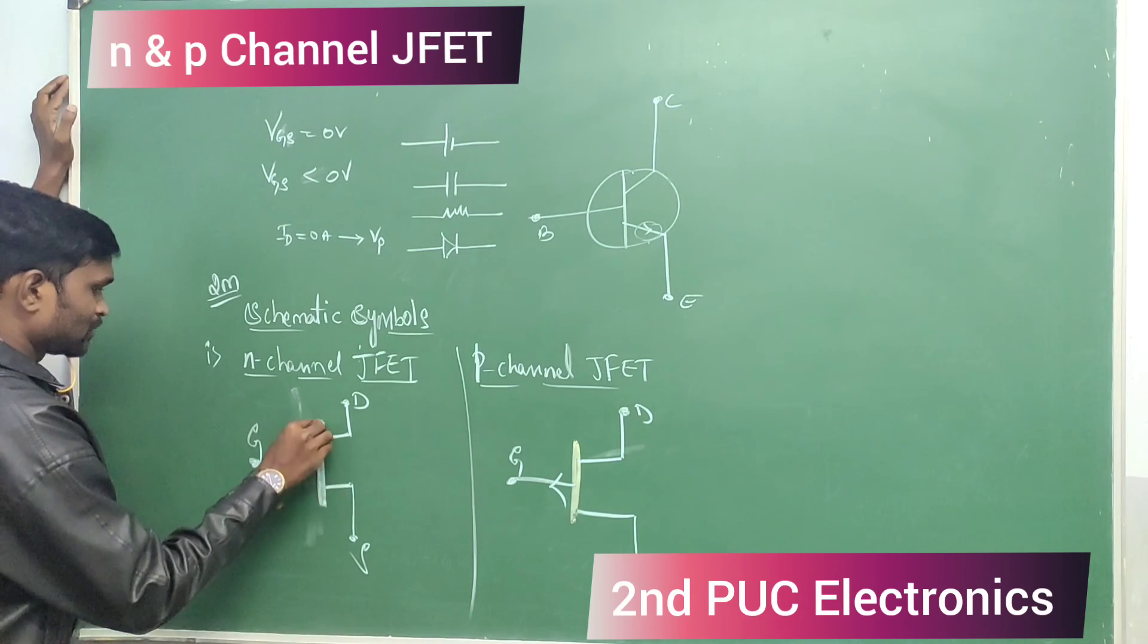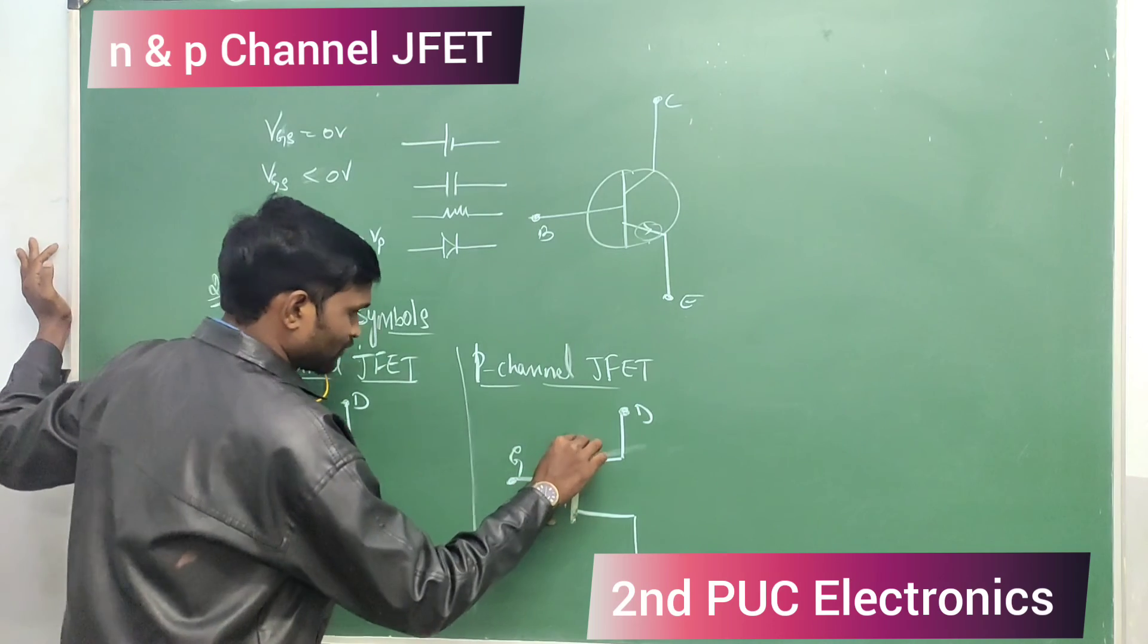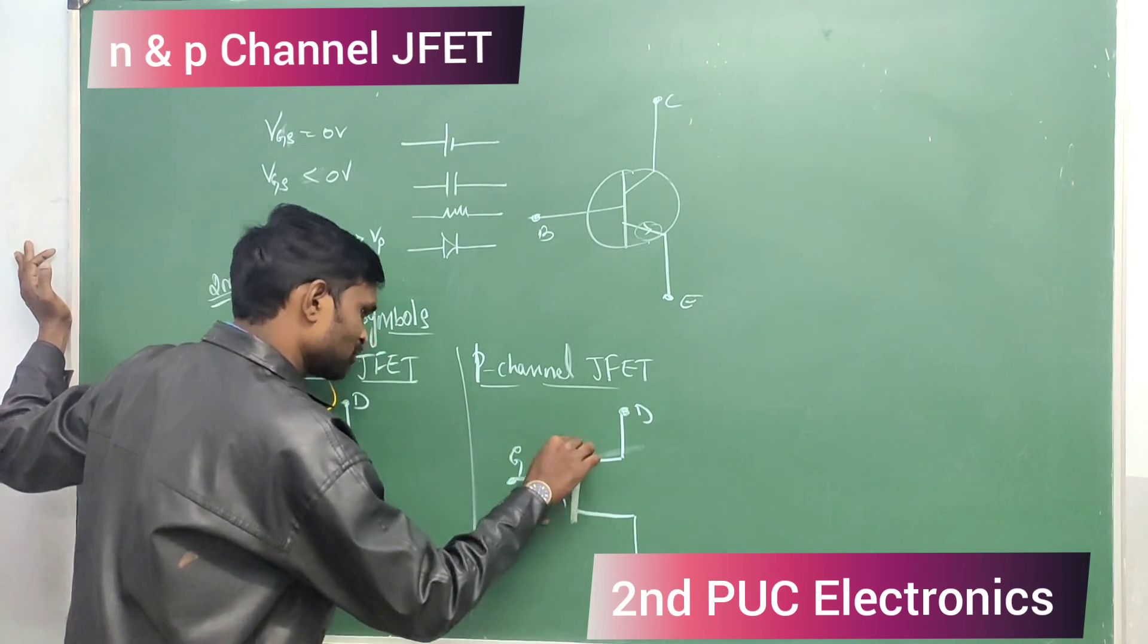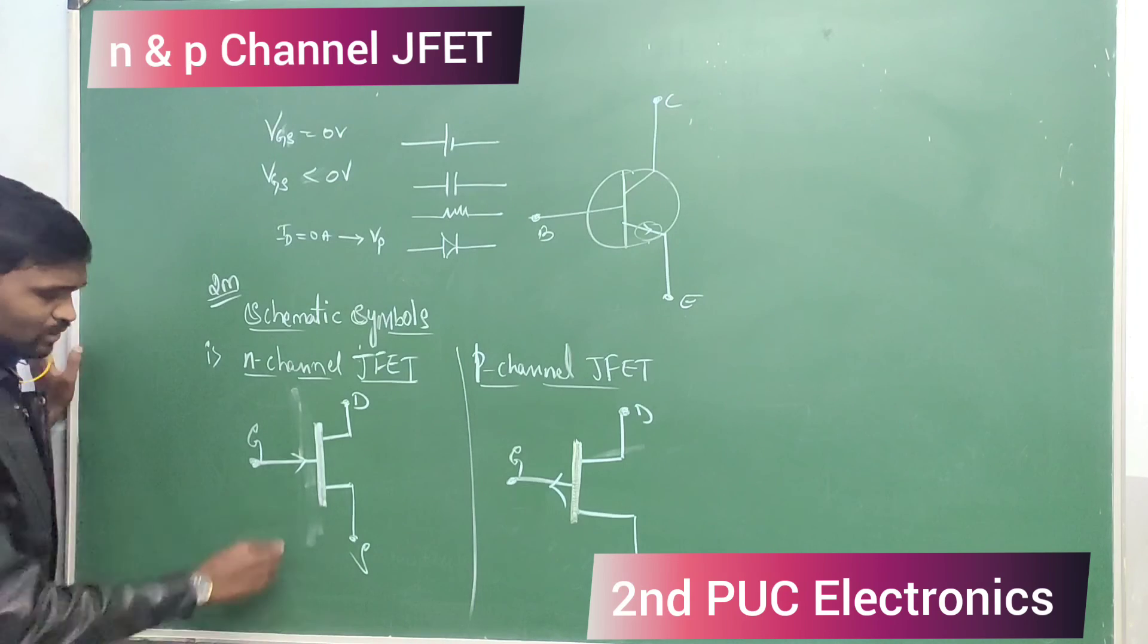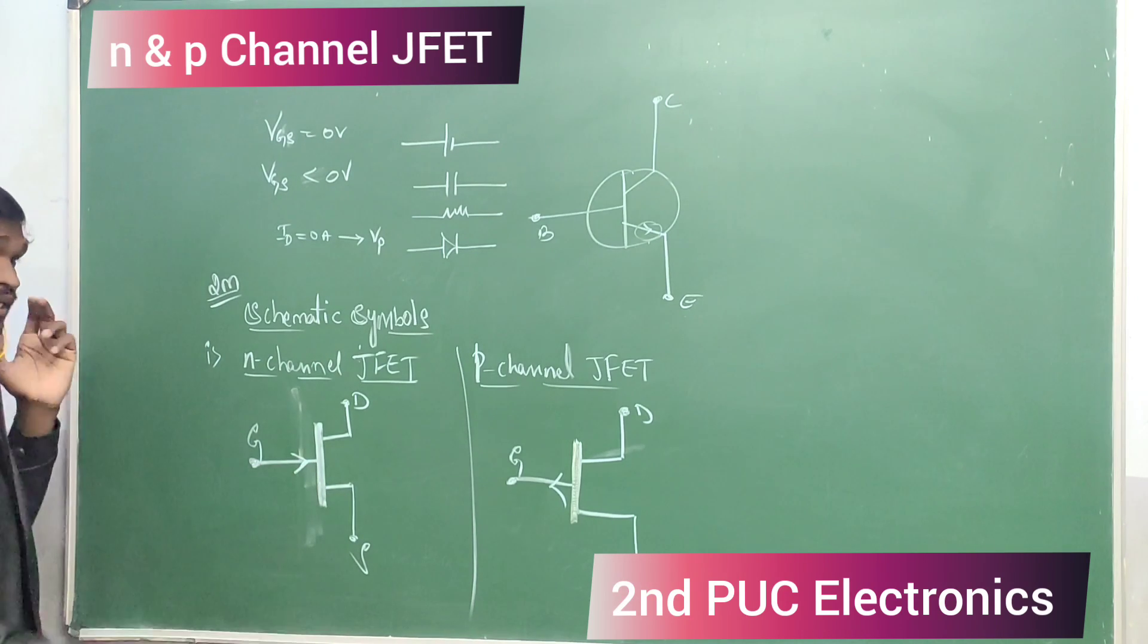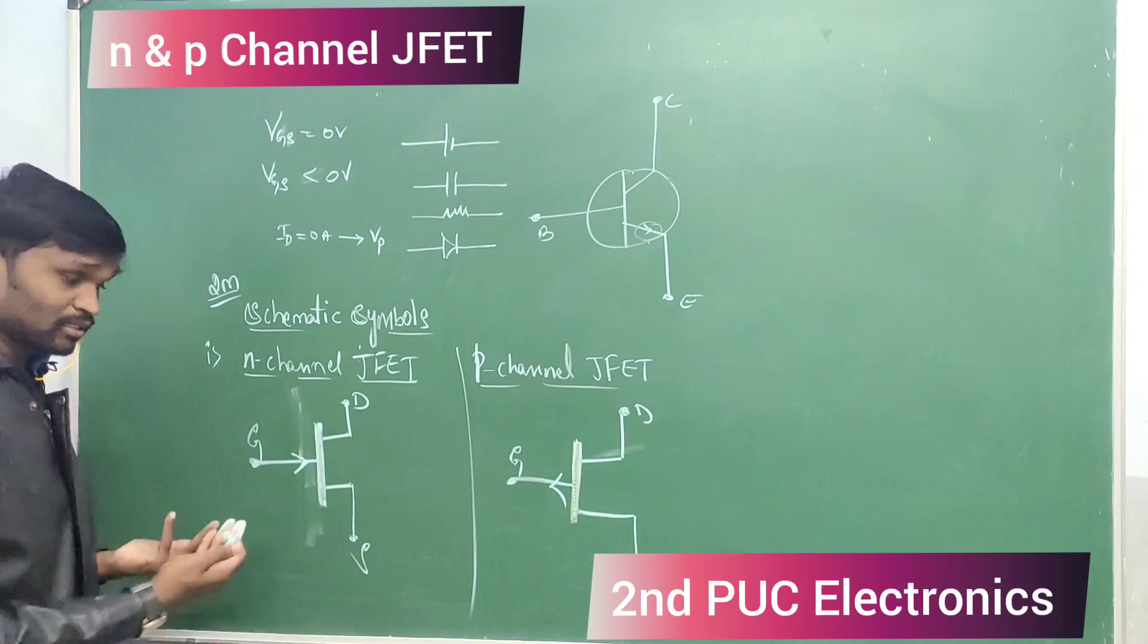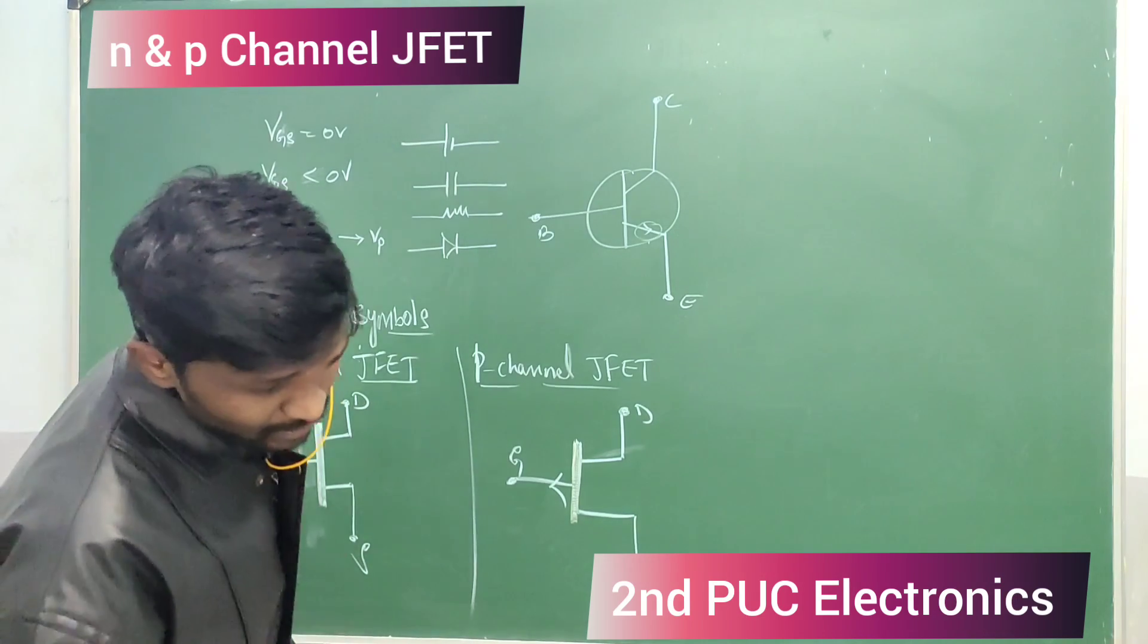Same, three terminals. Basic difference is arrow mark. Arrow mark indicates the movement of current. Simple. It allows the movement of current.